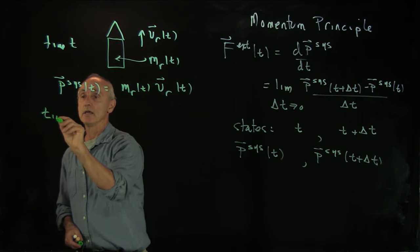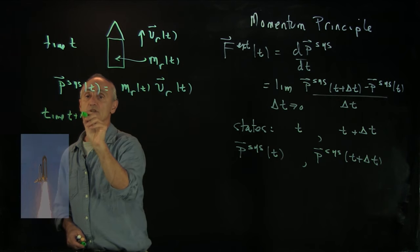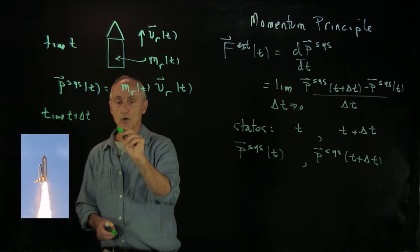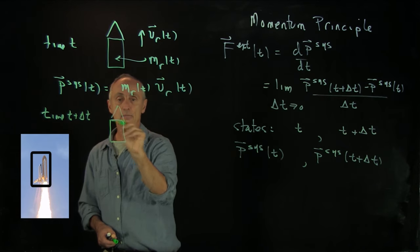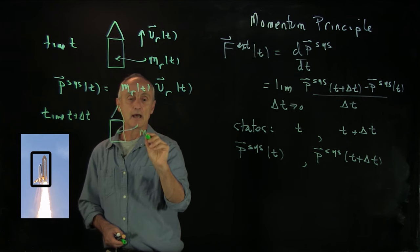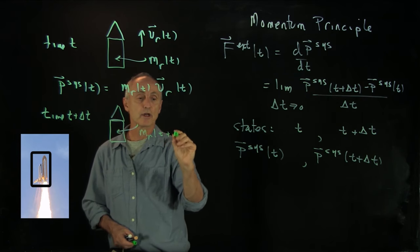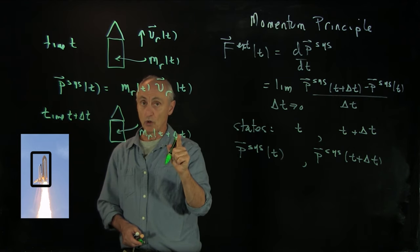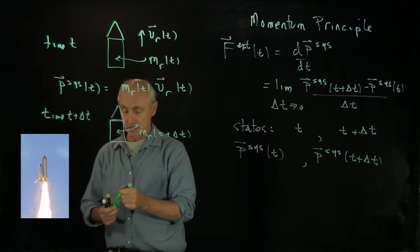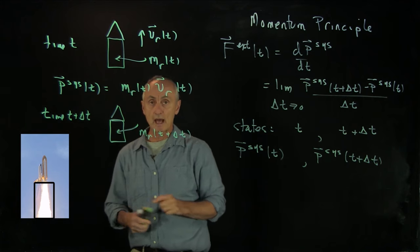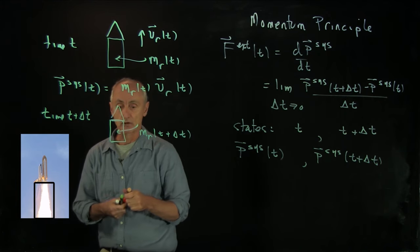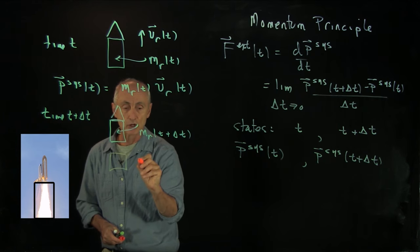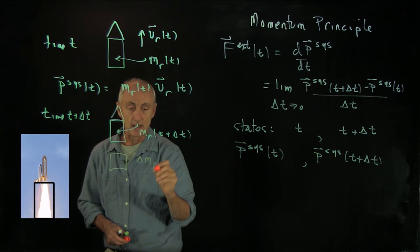Our next step is to consider the system at time t plus delta t. The rocket is still there, but the mass of the rocket has changed — that's the dry mass of the rocket plus the remaining mass of the fuel. But recall, some of the fuel has been ejected outwards. We'll symbolize that ejected amount as delta m fuel.